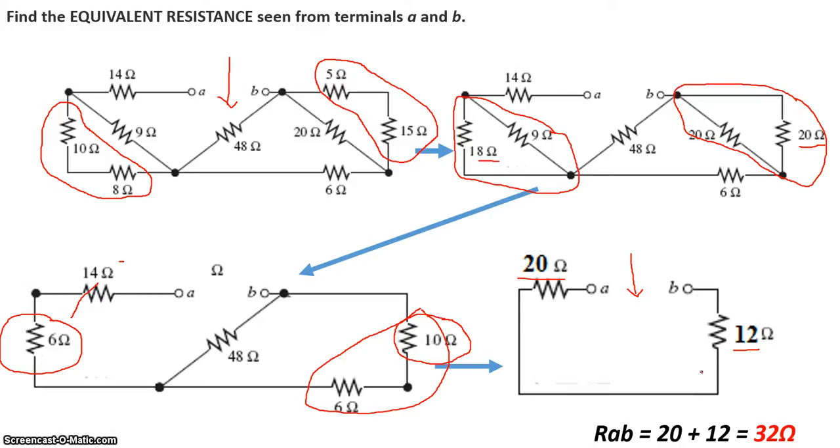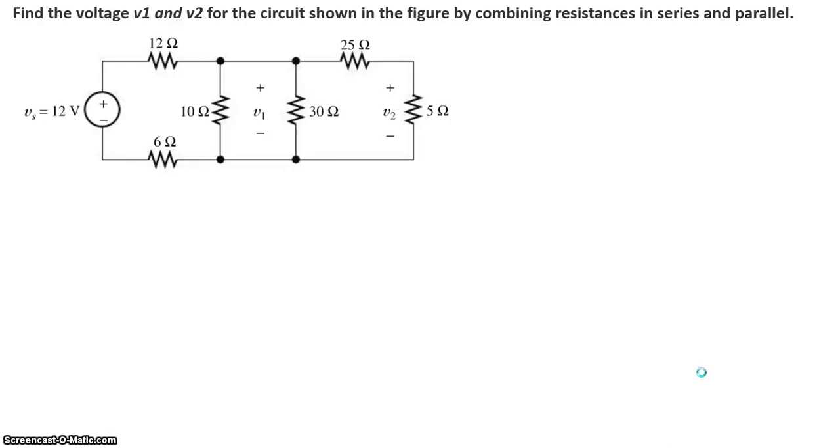For our next example, we'll use a combination of series and parallel resistances to find voltages in a circuit. So in this particular circuit, we're asked to find the voltage across these two nodes right here. We call V1 and V2 between this node and this node. And we're asked to do this by combining series parallel circuits. So let's get started.